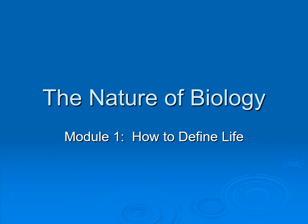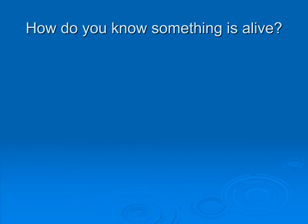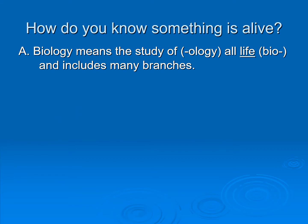Today we're looking at how to define life. So how do we know something is alive? As biologists, we have various ways that we can say that something is alive. But first, what is biology? Biology is the study — 'ology' — of life — 'bio' — and it includes many different branches: biochemistry, molecular biology, and lots of different branches that we'll learn more about throughout the year.